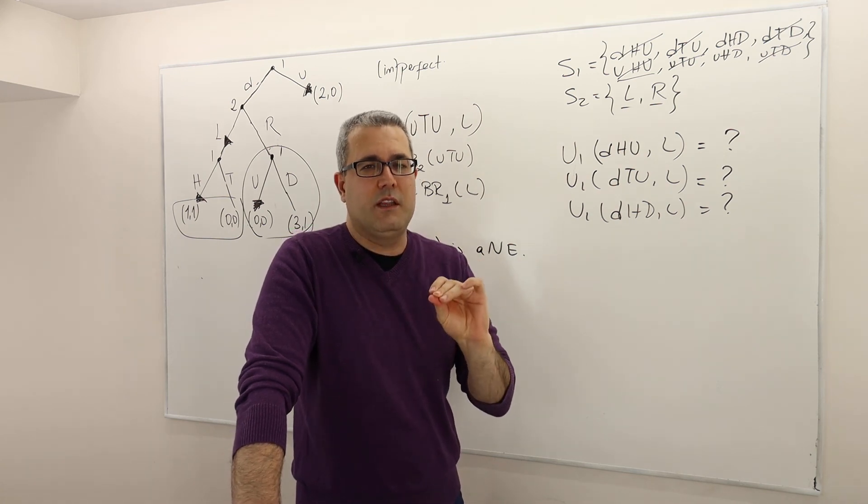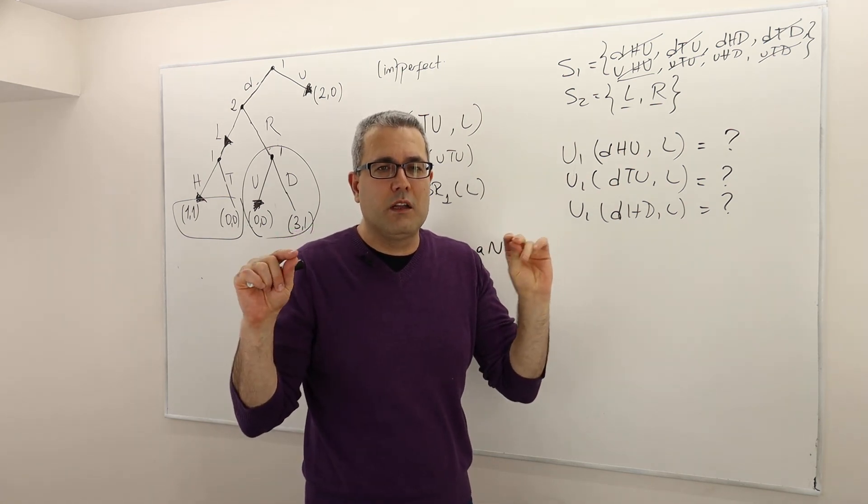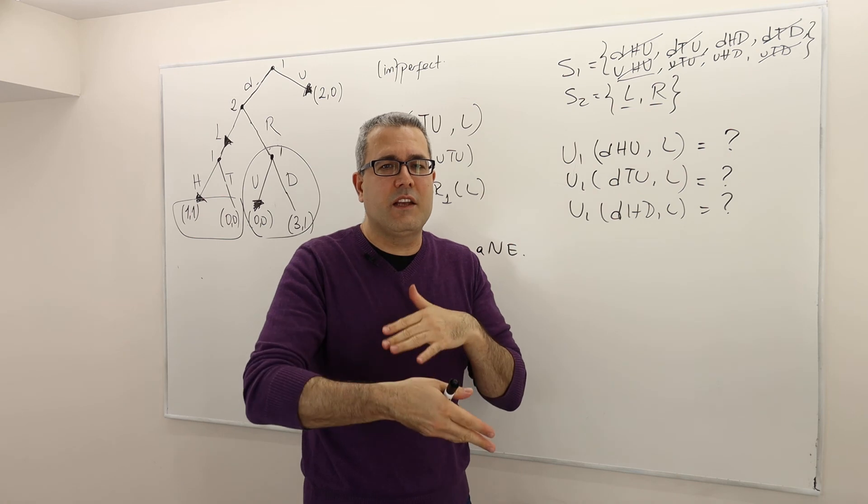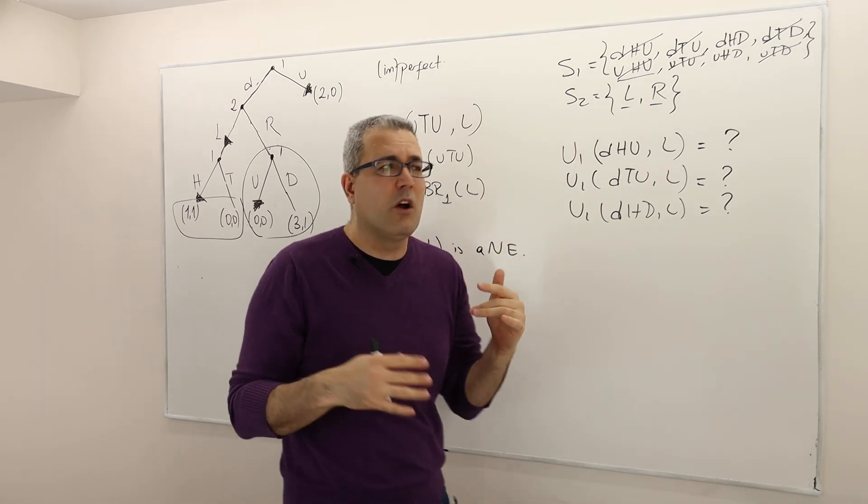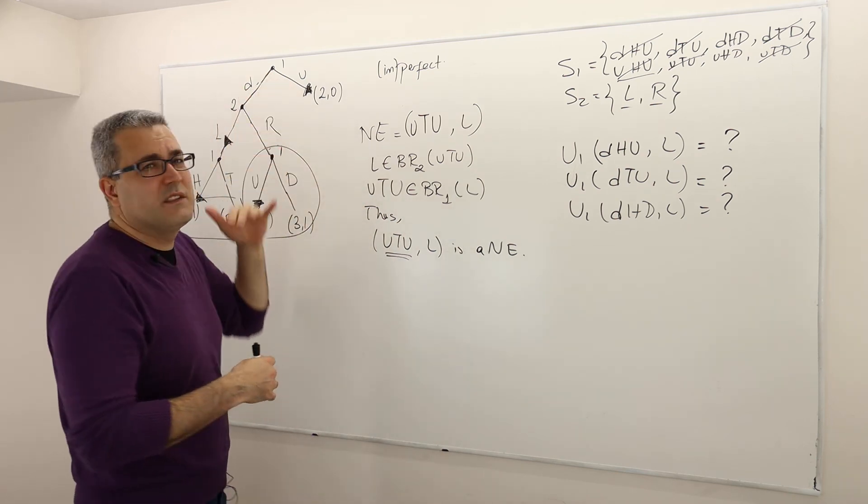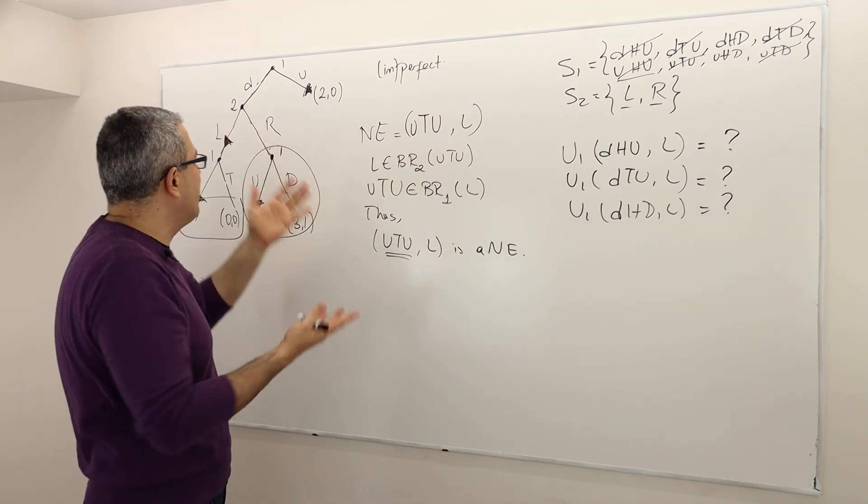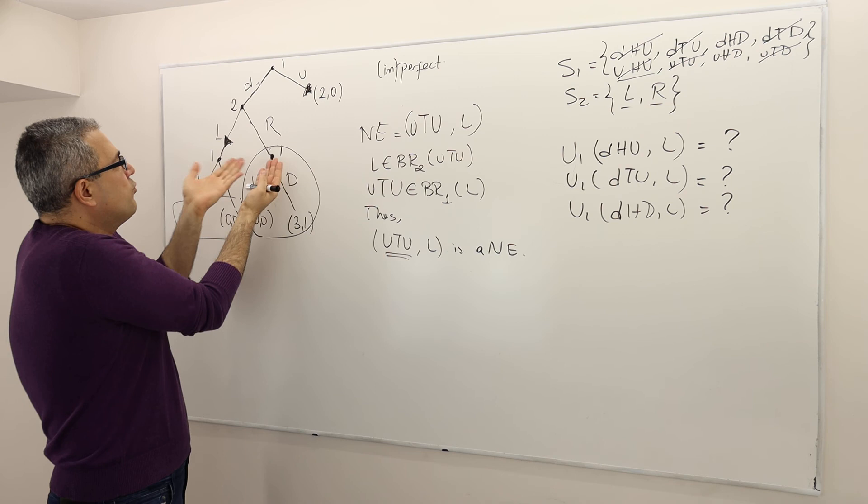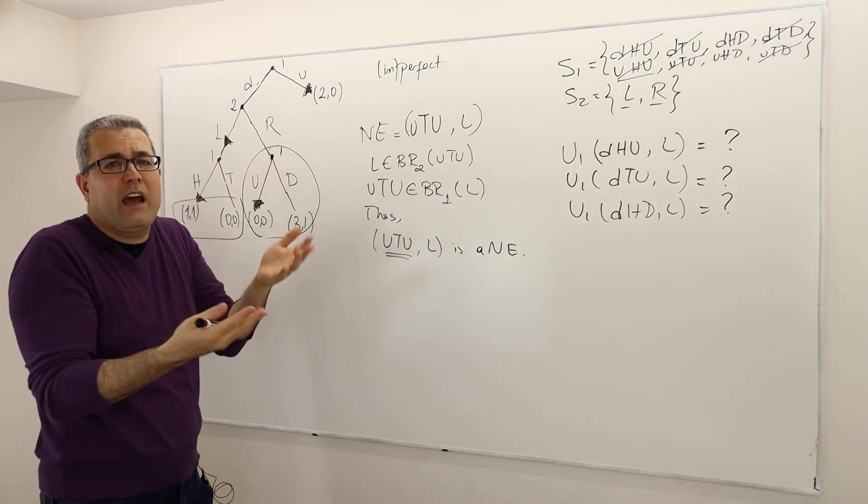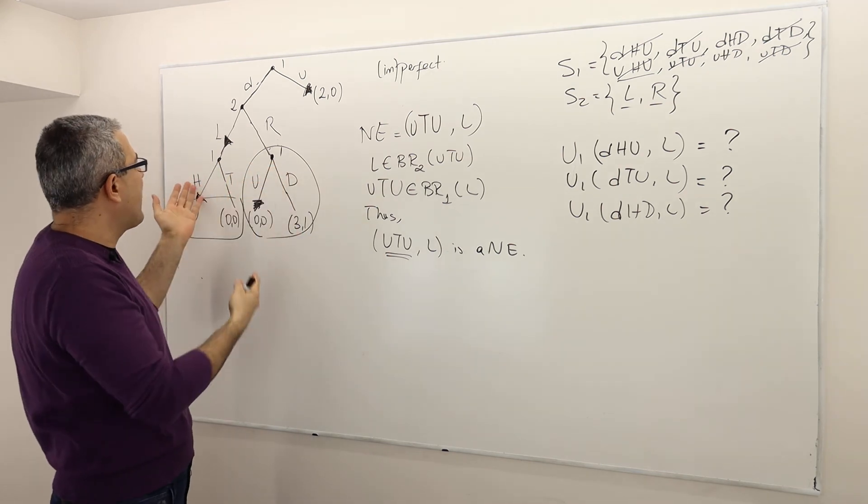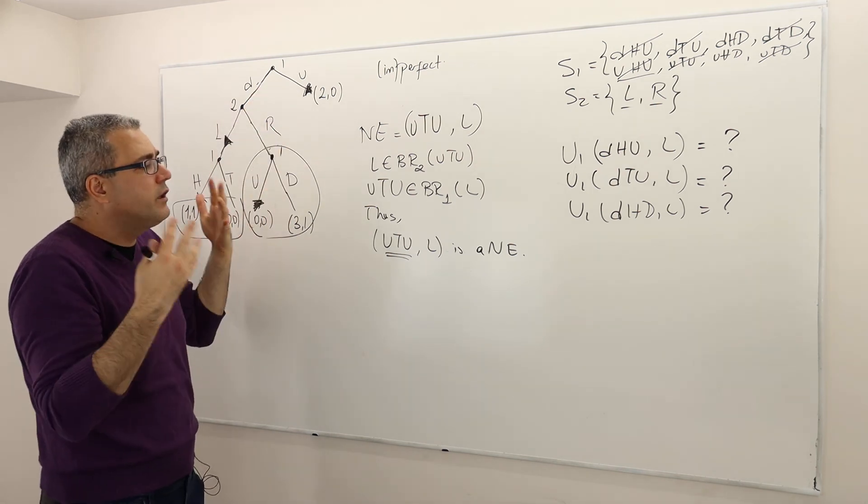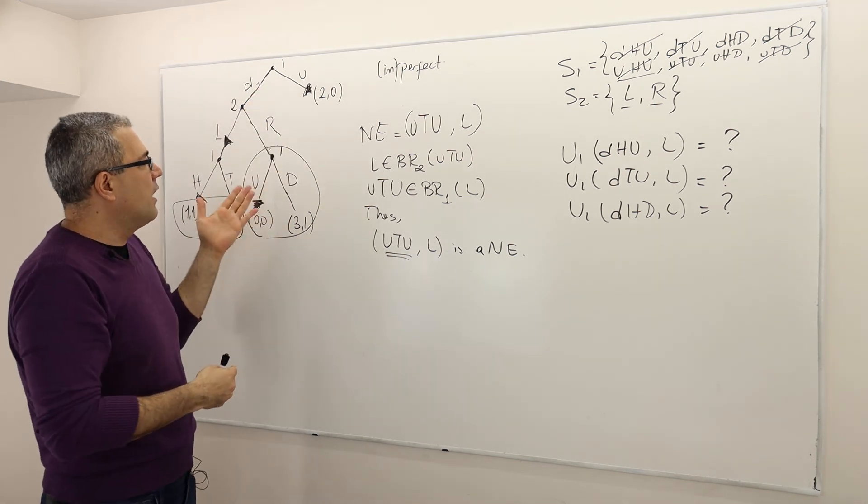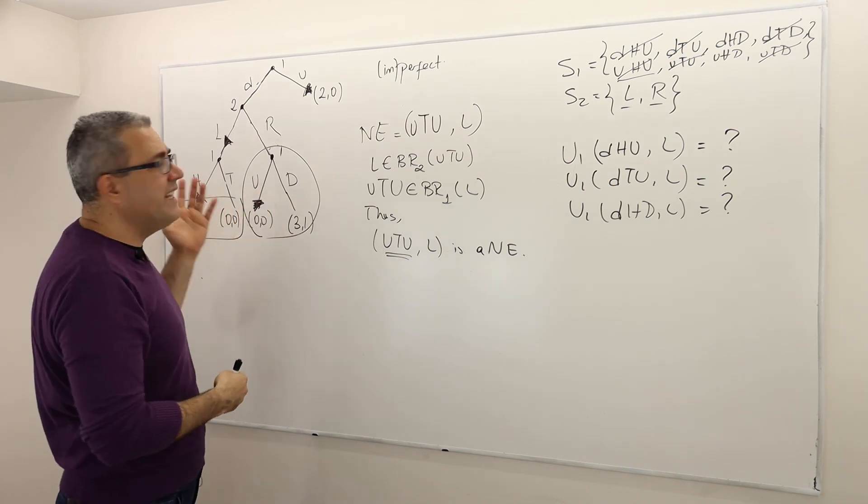I know it's confusing that some strategy profile is Nash and then not SPNE, or SPNE but not Nash. It's like, what the hell is going on? So here, player one is playing U, goddammit. I mean, he will never have the opportunity of playing U or H here because he has chosen to play U. So why do I worry about U here or T here?